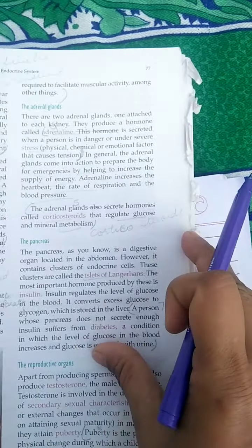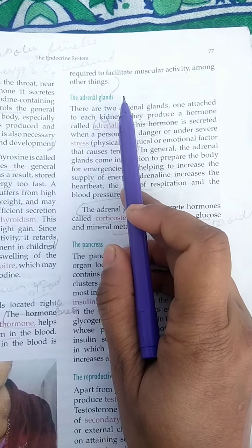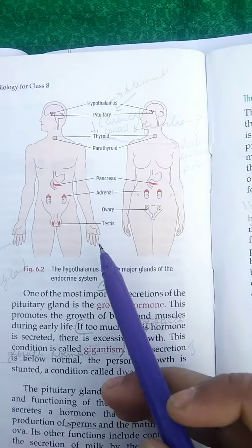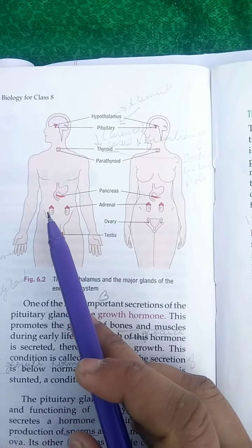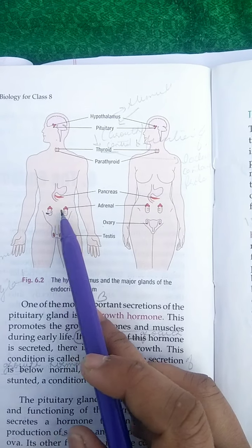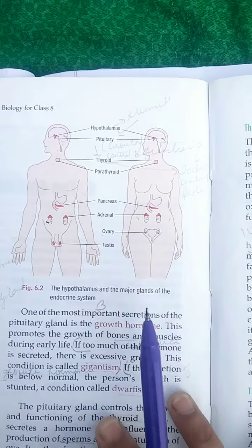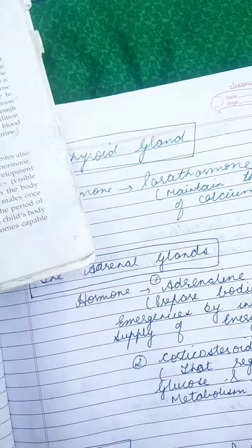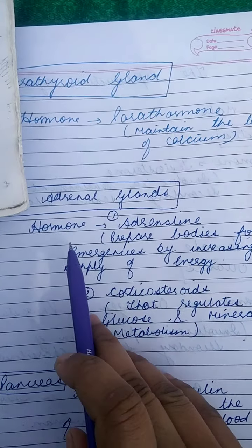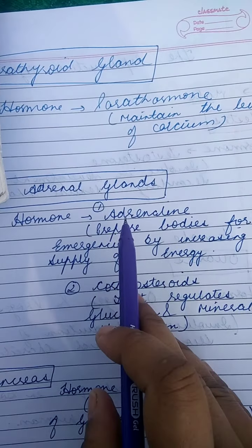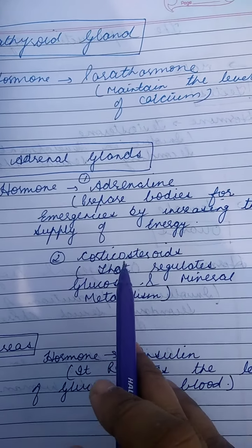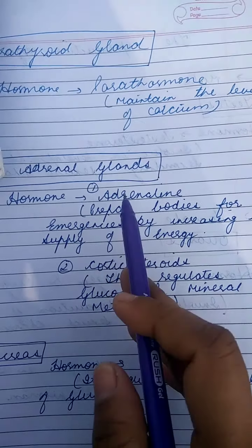Today we will discuss about the adrenal glands. The adrenal glands are present on top of both kidneys. The adrenal glands secrete two hormones: adrenaline and corticosteroids.